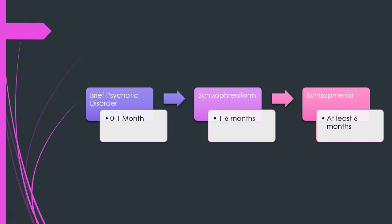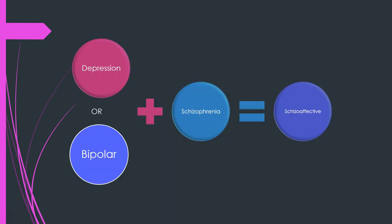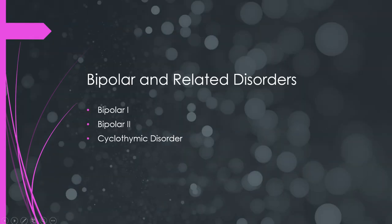There are three related disorders that essentially differ by time duration. If you've had symptoms for less than a month, you might be diagnosed with brief psychotic disorder. Between one and six months is schizophreniform disorder. At least six months is full-blown schizophrenia. Schizoaffective disorder is where you meet the diagnostic criteria for both depression or bipolar and some criteria for schizophrenia — essentially a double whammy of both.